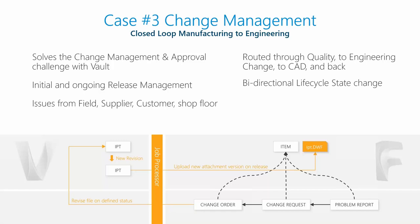Those are the three main functional areas of the Cool Orange Connector: it creates a folder structure in Vault automatically when an NPI process reaches a certain stage gate; it pushes CAD information — part numbers, bill of material, and visualization files — from Vault into Fusion Lifecycle; and for change management, it manages the lifecycle states of Vault files based on the change order flowing through Fusion Lifecycle.